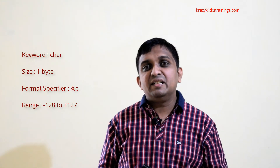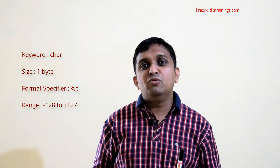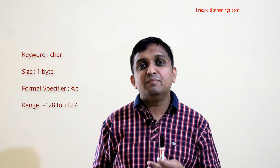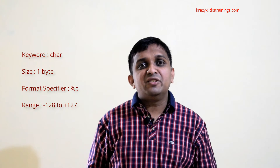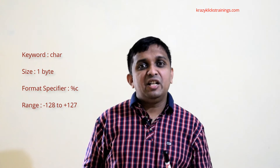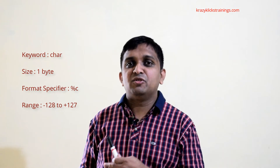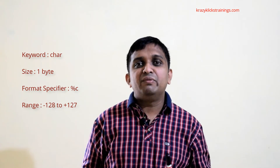Using the formula minus 2 raised to n minus 1 to plus 2 raised to n minus 1 minus 1, for character the n value is 8 because the size is 1 byte. So the range becomes minus 2 raised to 7 to plus 2 raised to 7 minus 1, which is minus 128 to plus 127.